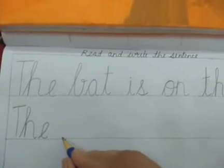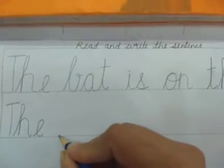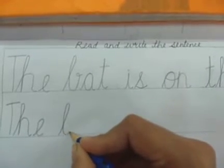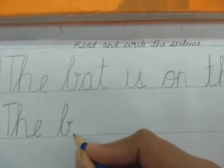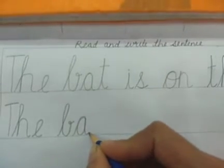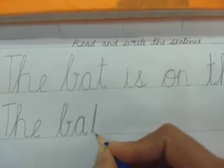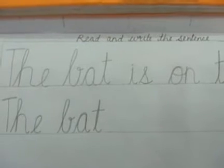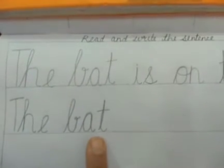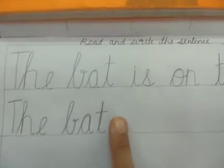So I begin from here. I write the word 'bat' — everything has to be lowercase — 'b', 'a', 't'. So I've written the two words: 'the bat'.